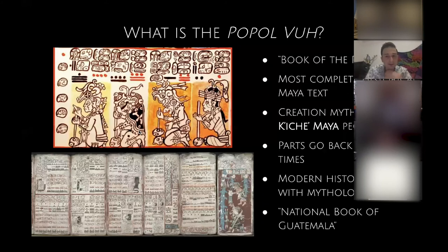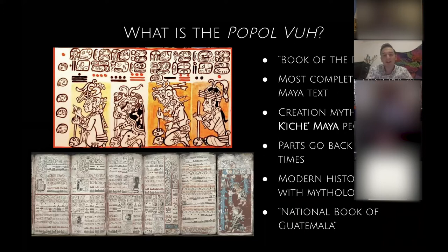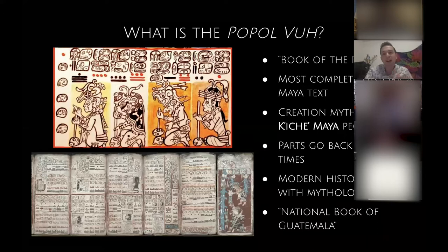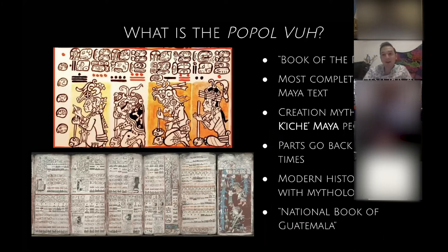So what is the Popol Vuh? The meaning of the name is the Book of the People or Book of the Community. It's from what is today Guatemala, and it was originally written in a language called K'iche, which is a Maya language. There's not only one Maya people — there have always been multiple different groups of Maya who speak different but related Maya languages. So when they say Book of the People, they really mean the K'iche. This is very much a K'iche story.